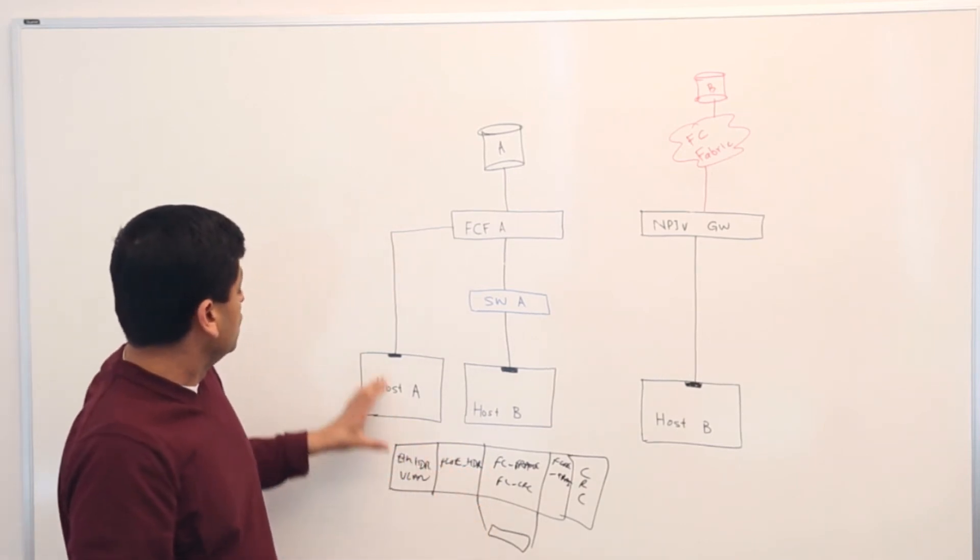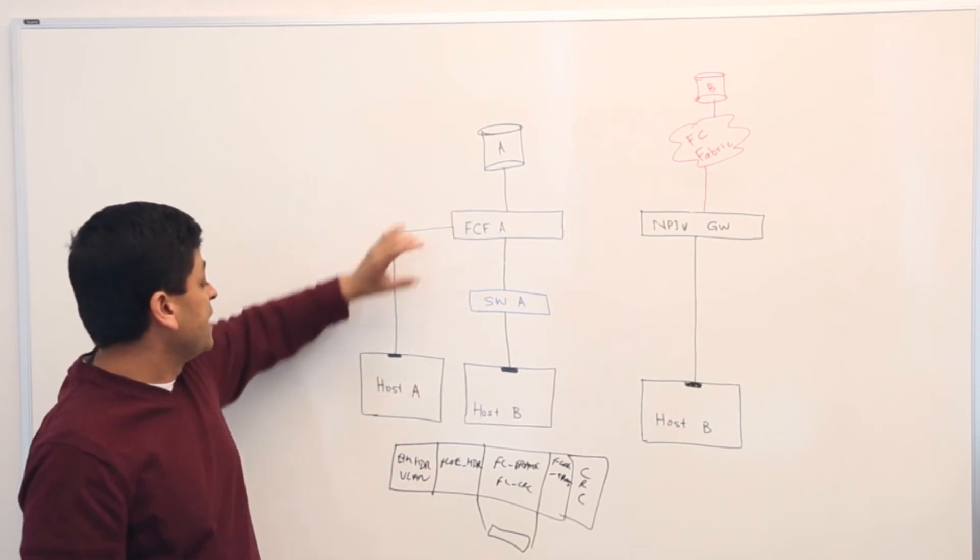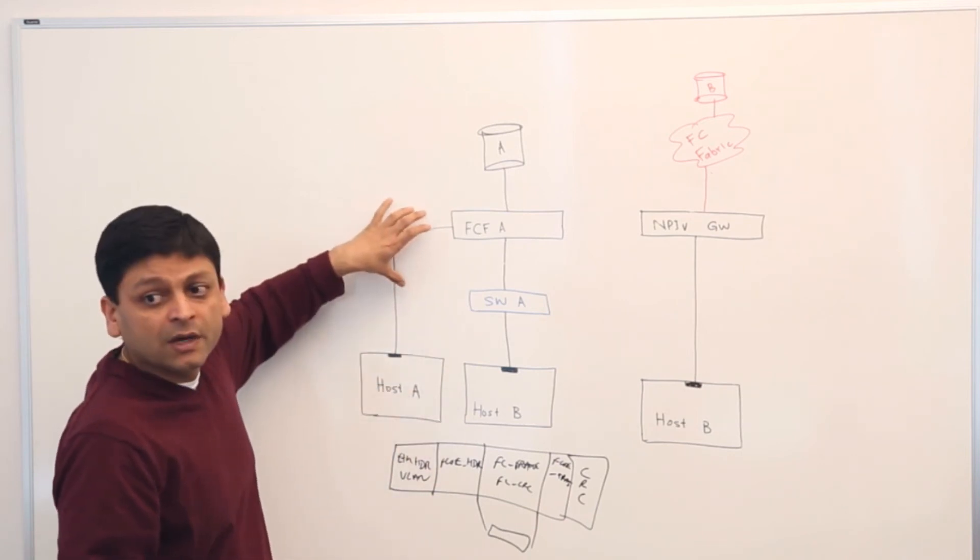So when this host or this initiator is sending frame, this is what it will be sending. This is how the frame would look like on the wire.